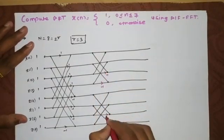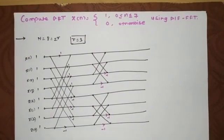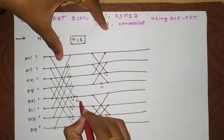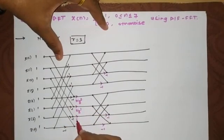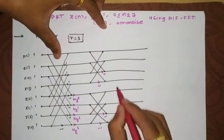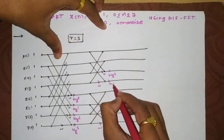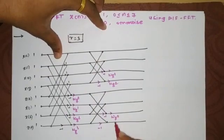Now we'll write the twiddle factors. For the 8-point DFT, the total twiddle factors for the first stage are: ω₈⁰, ω₈¹, ω₈², ω₈³. For the second stage: ω₈⁰, ω₈², ω₈⁰, and ω₈². This completes the twiddle factor assignment for both stages.